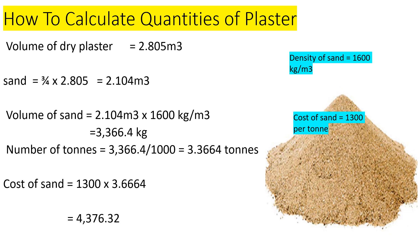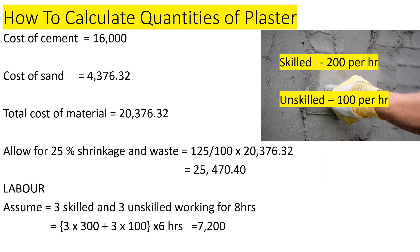For sand, the volume is 3 over 4 (total ratio) multiplied by 2.805, giving us 2.104 cubic meters. We convert this to mass using the density of sand at 1600 kg per cubic meter, giving us 3366.4 kg. Converting to tons by dividing by 1000, we get 3.3664 tons. At a cost of 1300 shillings per ton, the cost of sand is 3.3664 times 1300, giving us 4,376.32 shillings.